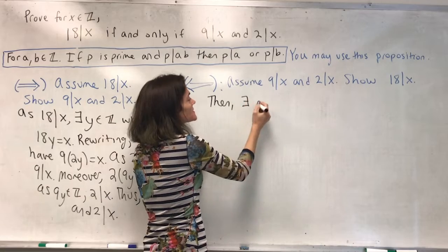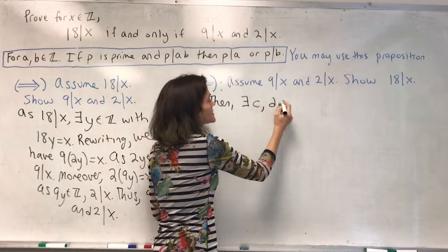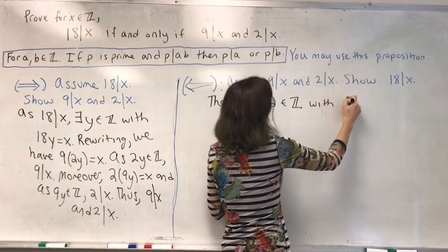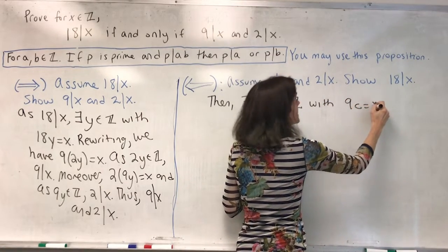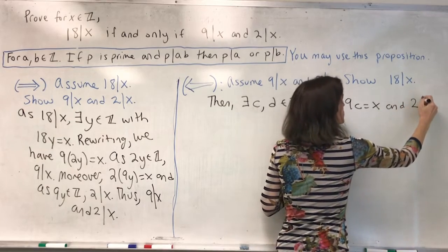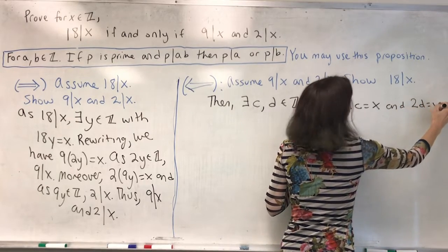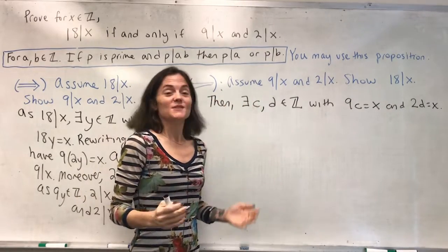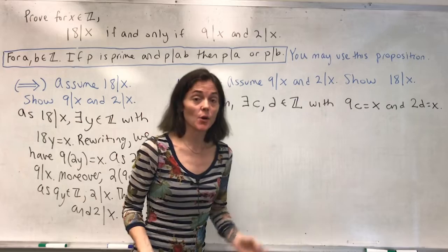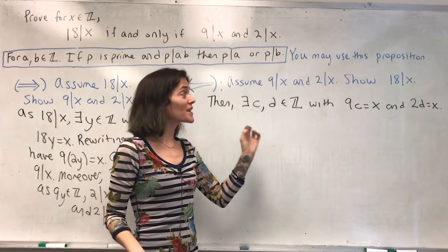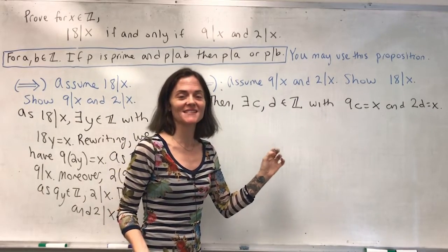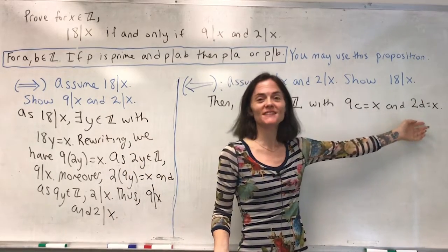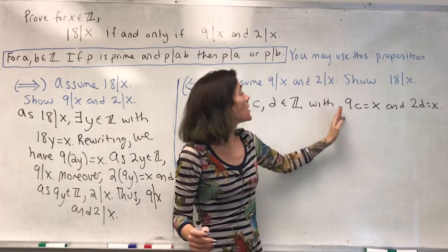We have 9 divides x and 2 divides x. Then there exists, we'll say, c and d integers, with 9c is x and 2d is x. Let's talk about our strategy here. We must think about what we want to show. We want to show 18 divides x. We do not have it yet. We have 9c is x. We have 2d is x.